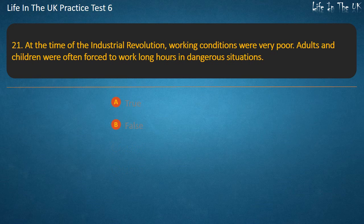Question 21. At the time of the Industrial Revolution, working conditions were very poor. Adults and children were often forced to work long hours in dangerous situations. True or false? Answer: True.